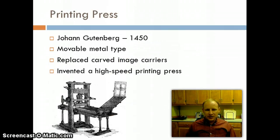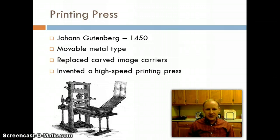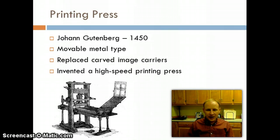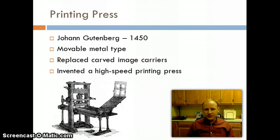Prior to the Industrial Revolution, Johann Gutenberg developed the printing press. He is often referred to as the father of mass communication because the printing press was such a powerful mechanism in catapulting the ability to mass produce printed works. This was back in 1450 when he developed the movable metal type.